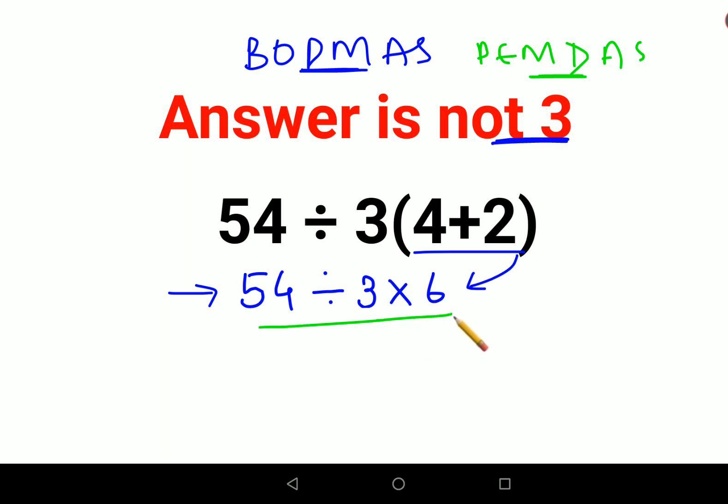So here we go with the rule of left to right. Whenever you have a question which has just multiplication and division, in that case you just go from left to right. So first we look at 54 divided by 3.